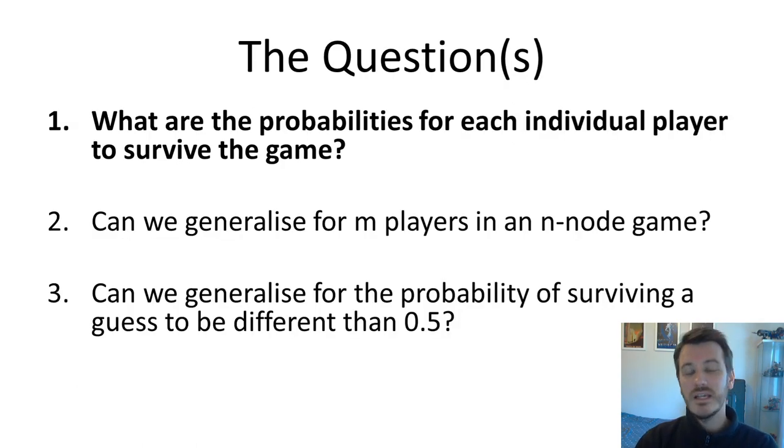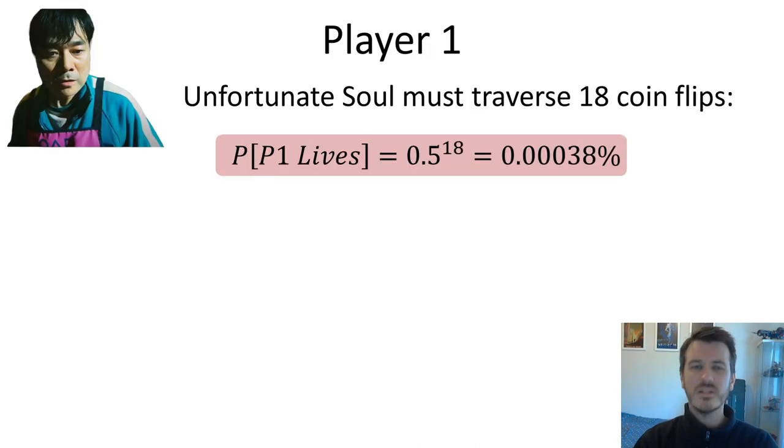So what are the questions we're trying to answer? Firstly and foremostly, what are the probabilities for each individual player to survive the game from player 1 through to player 16? Secondly, can we generalize the solution for any number of players, we'll call it m players, in an n-node game? And finally, can we generalize for the probability of surviving a particular step to be different than a half?